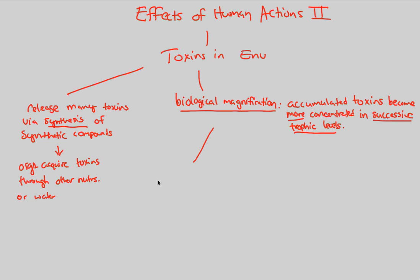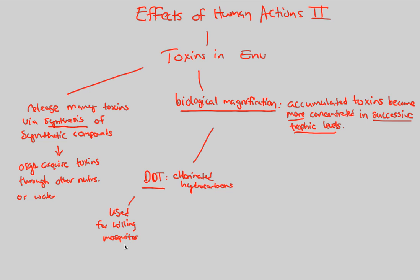A great — and rather unfortunate — example of this is the use of DDT, which are chlorinated hydrocarbons. These chlorinated hydrocarbons are technically supposed to be used for killing mosquitoes, which is considered acceptable since mosquitoes are pests that transmit malaria. But DDT also, through some sort of secondary exposure, oftentimes disrupts the endocrine systems of animals.